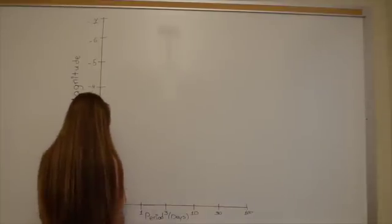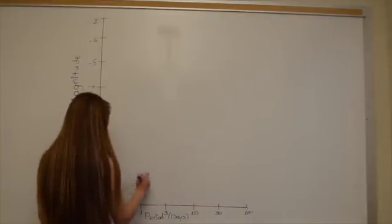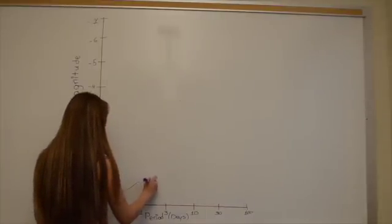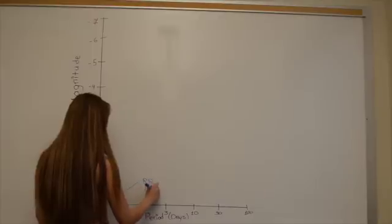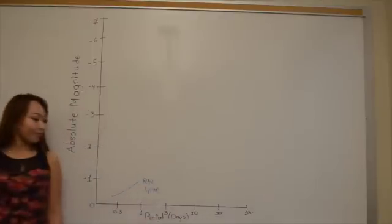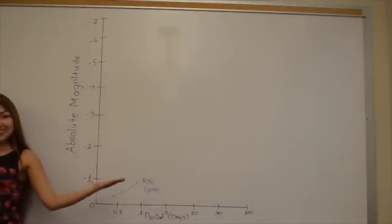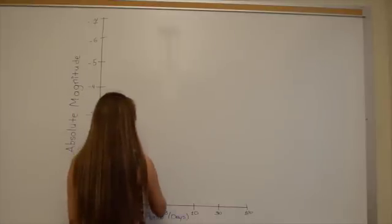A modern period luminosity diagram is actually a graph of absolute magnitude versus period of pulsation. In this diagram, we see that the longer period variable stars tend to be more luminous.